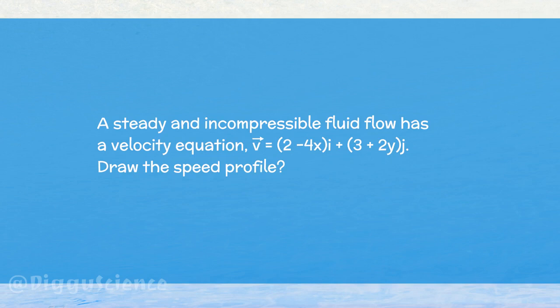A steady incompressible fluid flow has a velocity equation vector v equal to 2 minus 4x i hat plus 3 plus 2y j hat. Draw the speed profile.